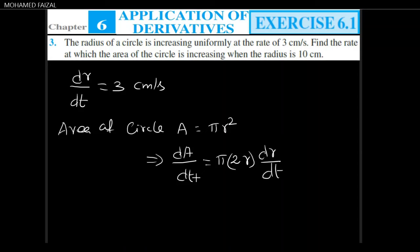We can differentiate these two. Area of circle A equals π r squared, so dA/dt equals π times 2r times dr/dt, which is 2πr times dr/dt.